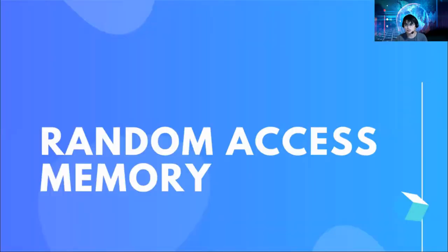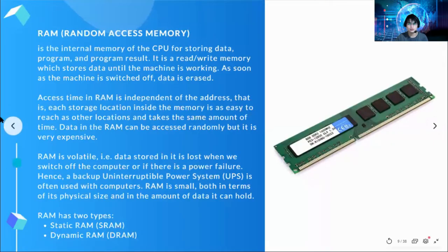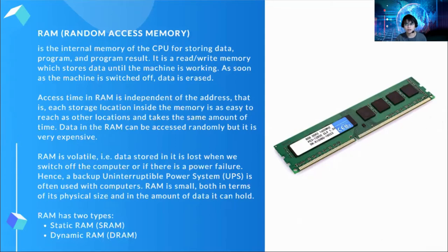Let's get into random access memory. RAM is one of the primary memories of a computer. It is the internal memory of a CPU for storing data, programs, and program results. It is a read-write memory which stores data until the machine is working. As soon as the machine is switched off, data is erased. Access time in RAM is independent of the address — each storage location inside the memory is as easy to reach as other locations and takes the same amount of time. Data in RAM can be accessed randomly but it is very expensive. RAM is volatile.